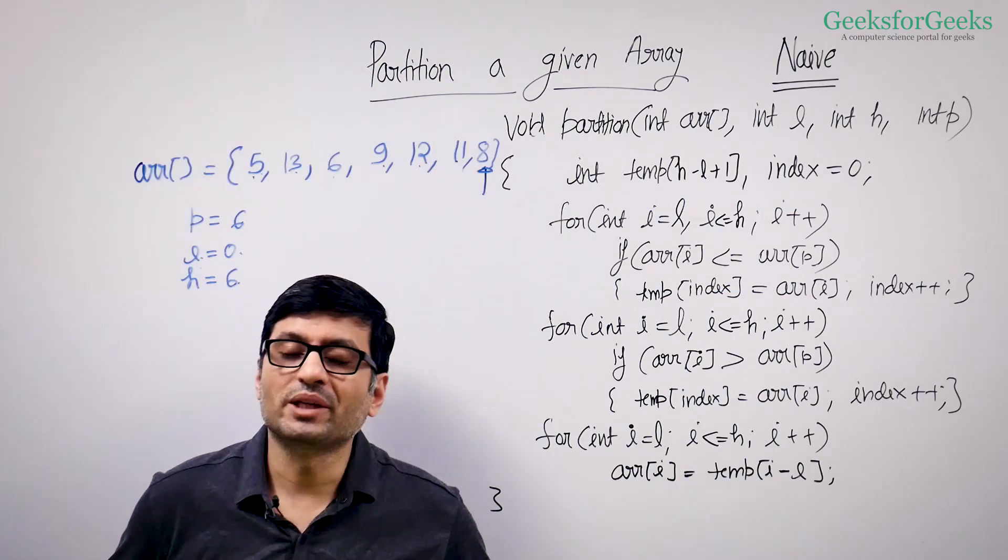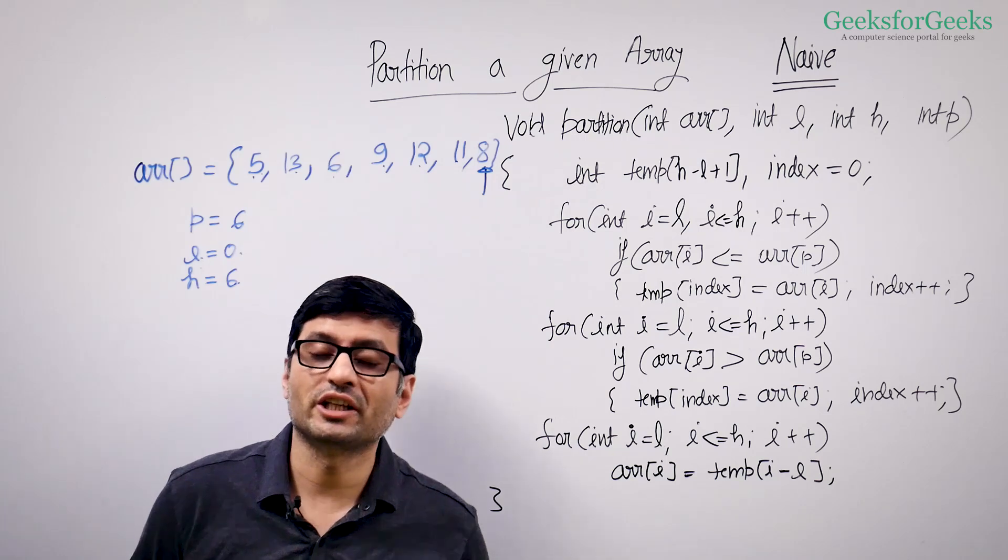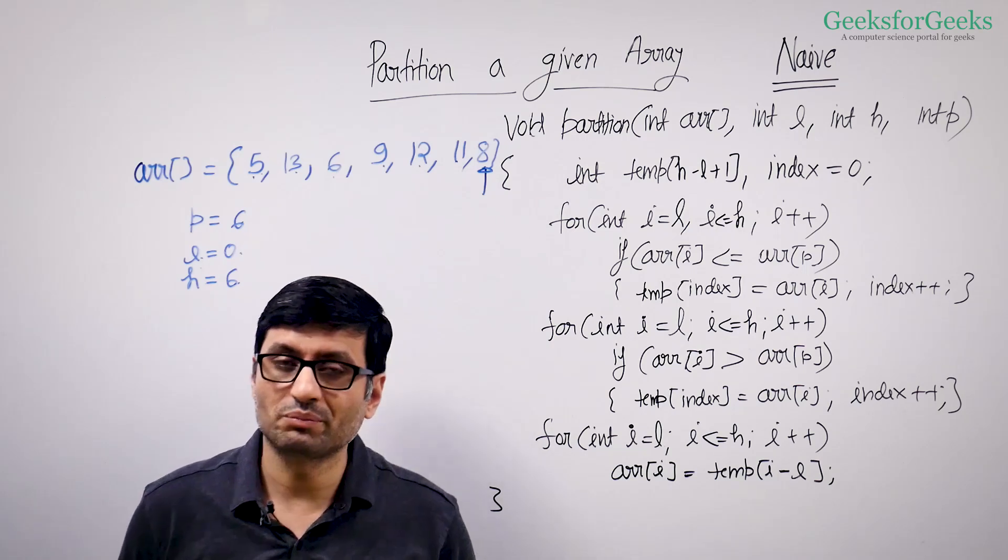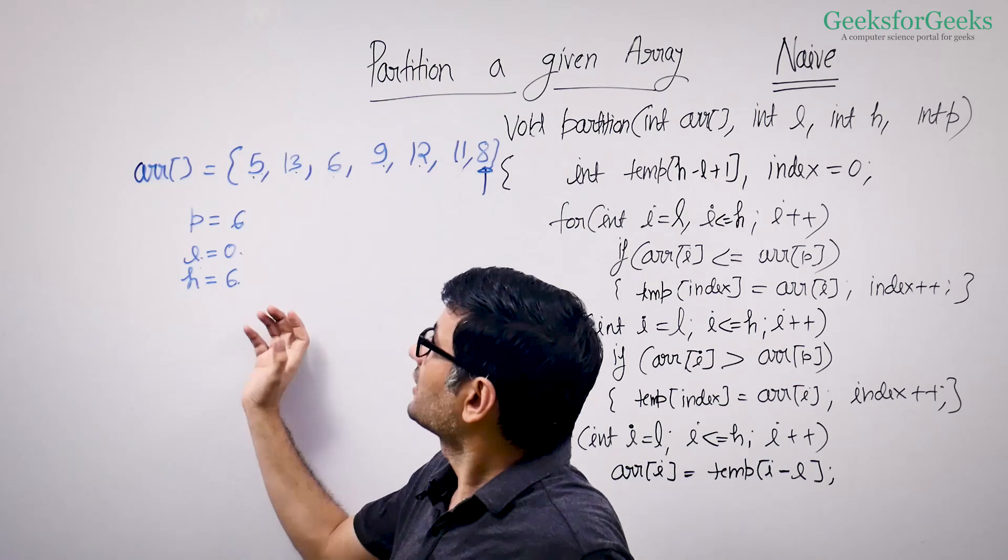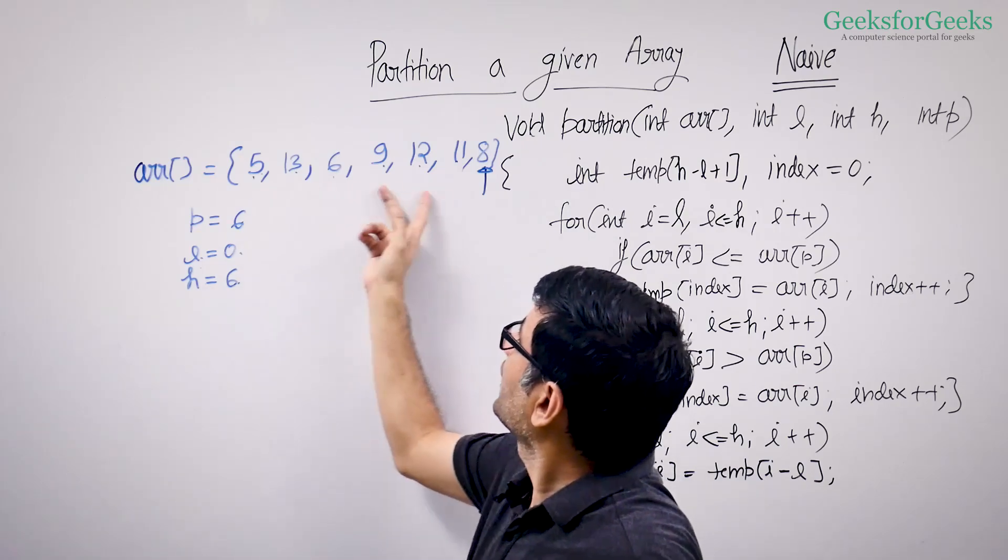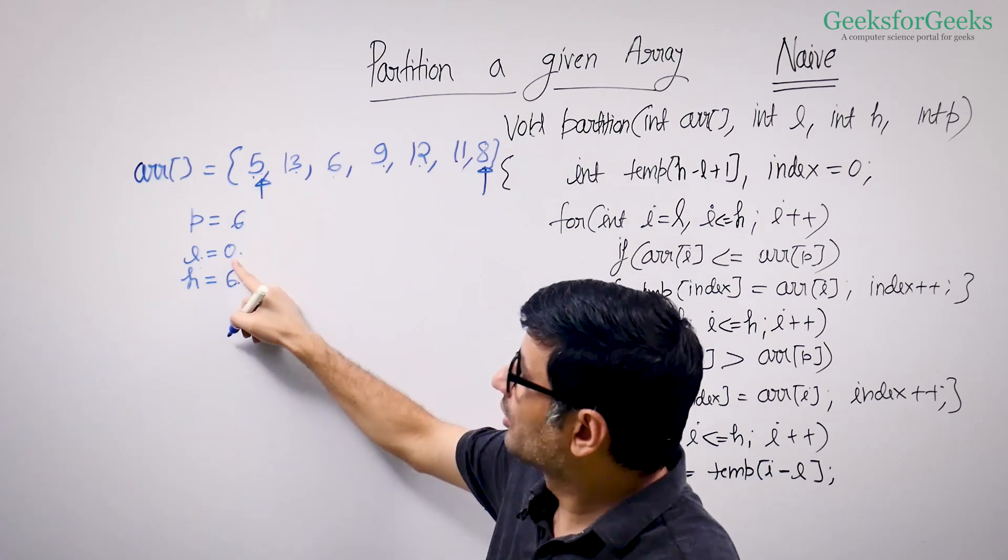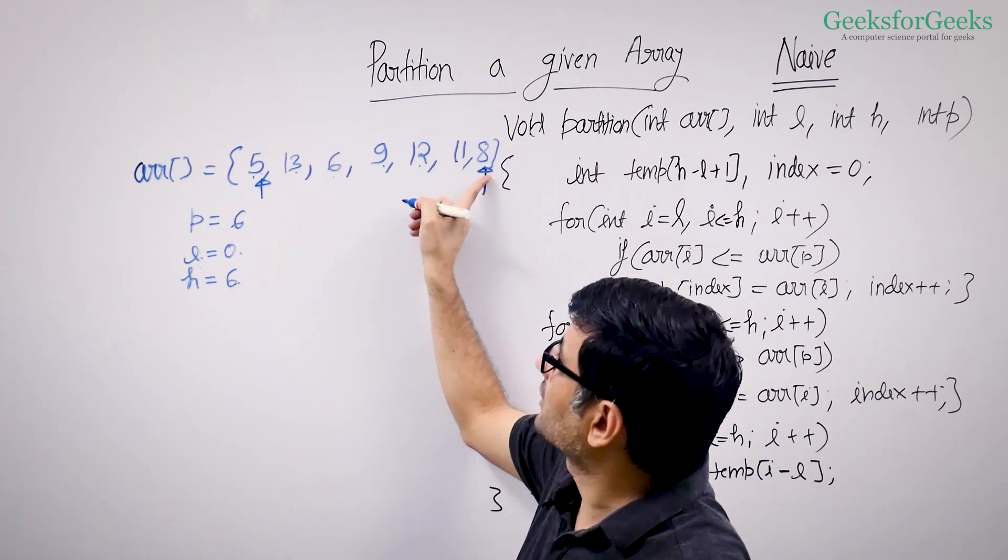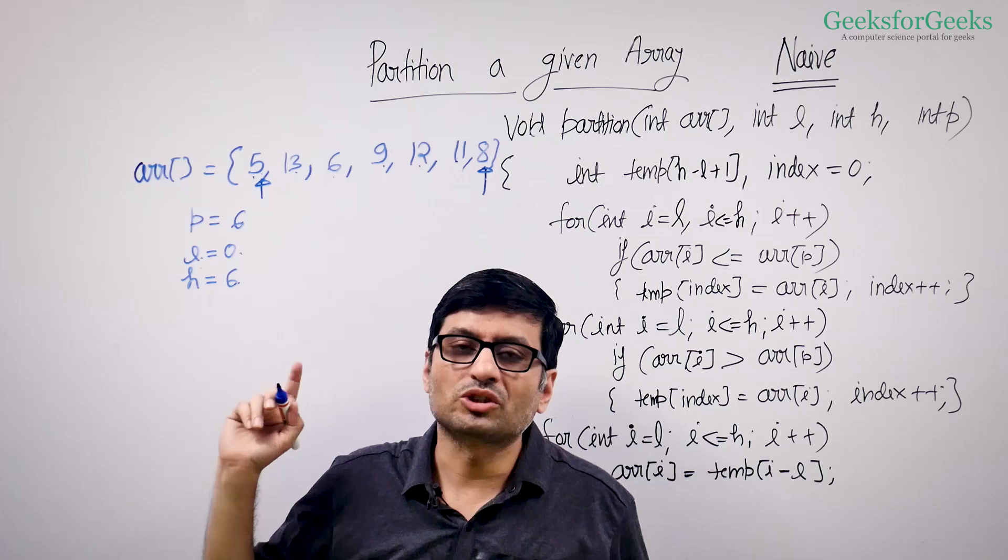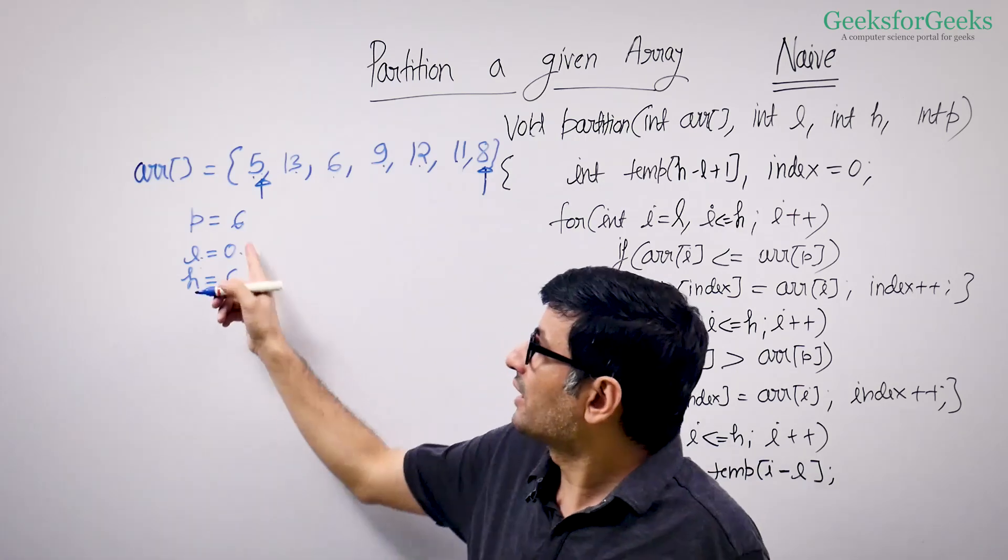Let us now talk about the naive solution to partition the array around a given pivot. Let's take a look at this example. We are given this array where low points to this element, low is 0, and high points to the last element.